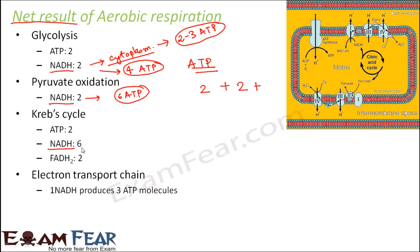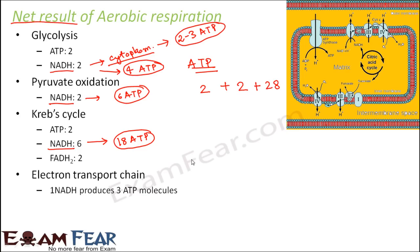The Krebs cycle NADH is also in the mitochondria, so 1 NADH could produce 3 ATP. So 6 NADH could produce 18 ATPs. The total number of ATPs produced from NADH were 18 plus 4, that is 22, plus 6, that is 28. So 28 ATPs from NADH.